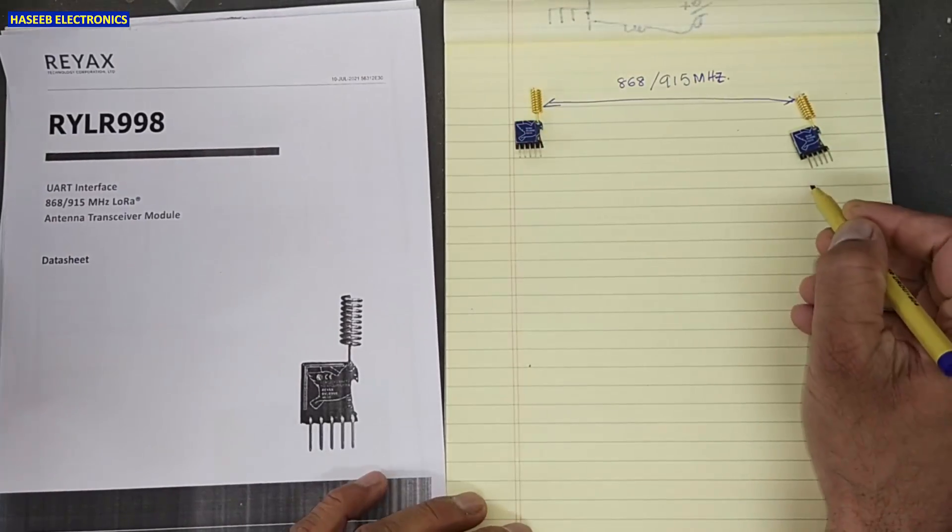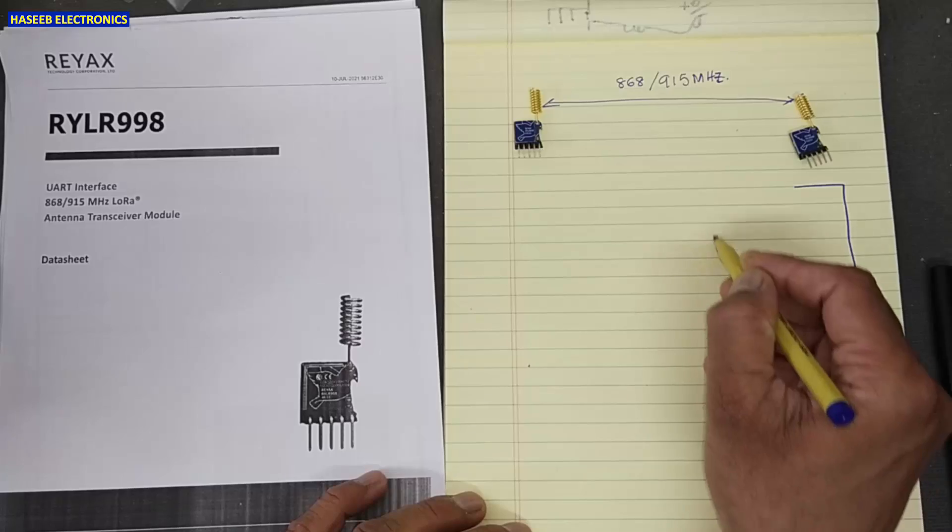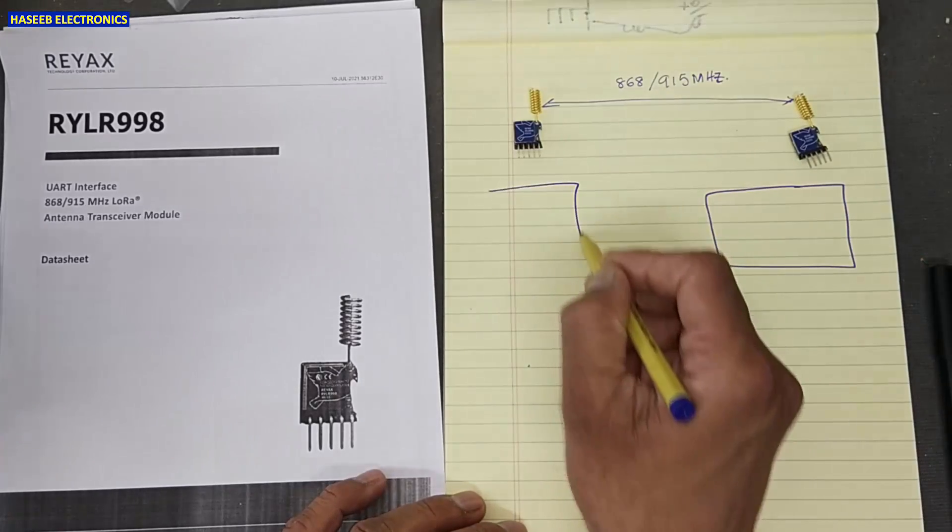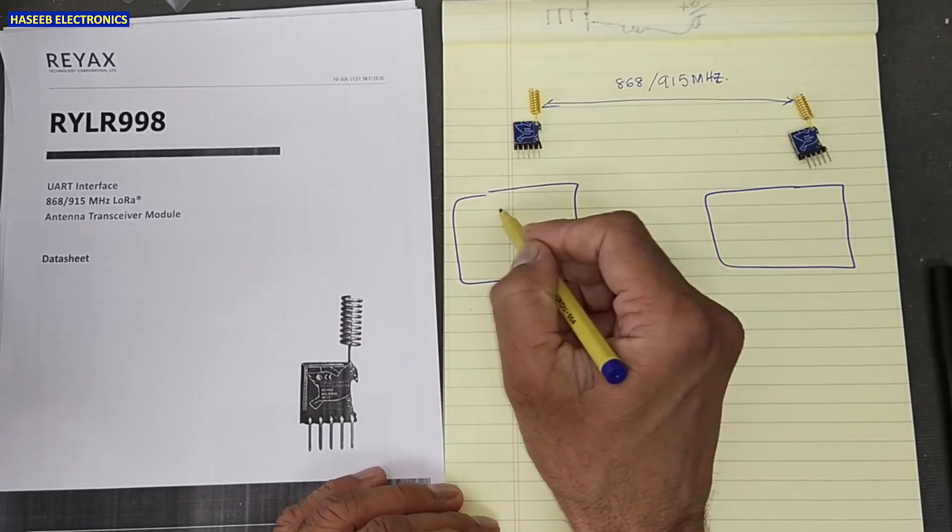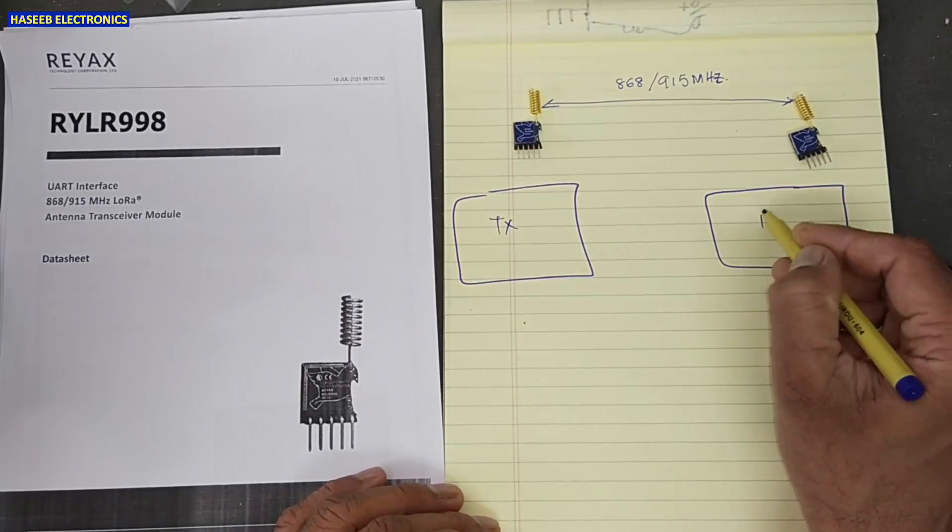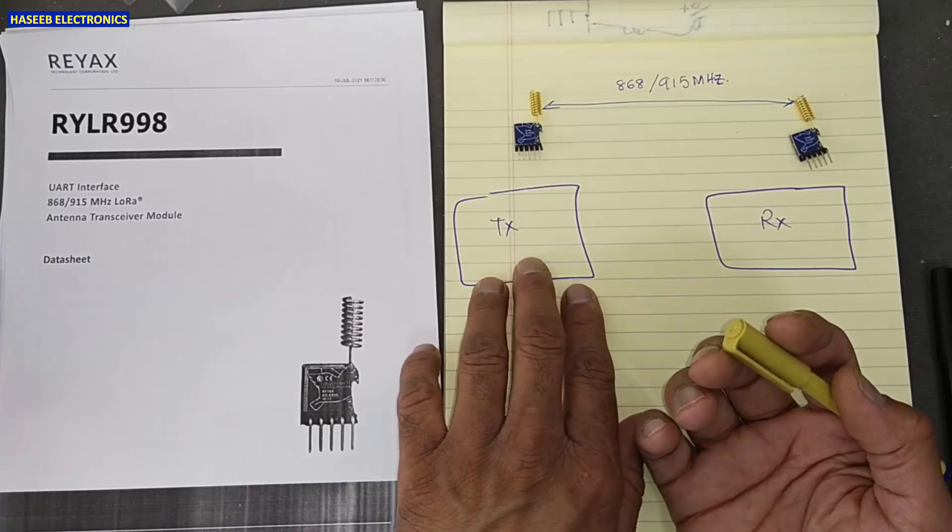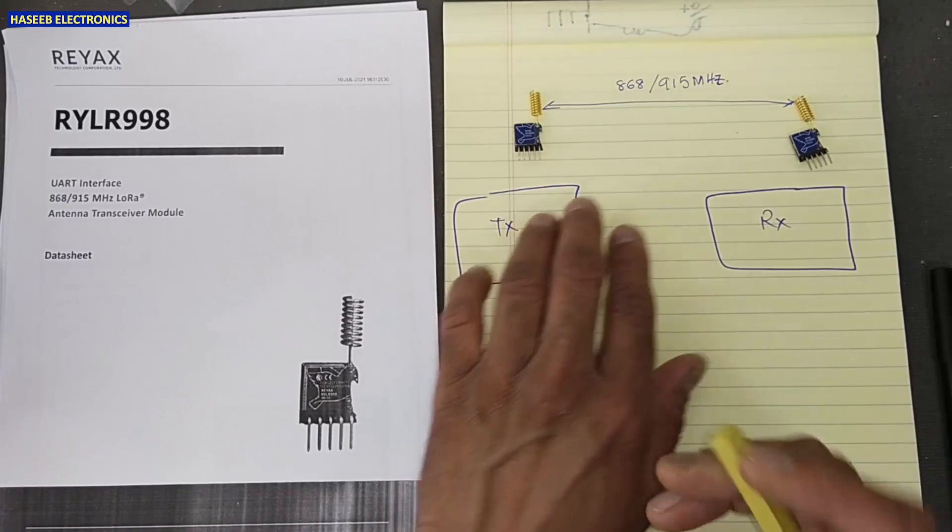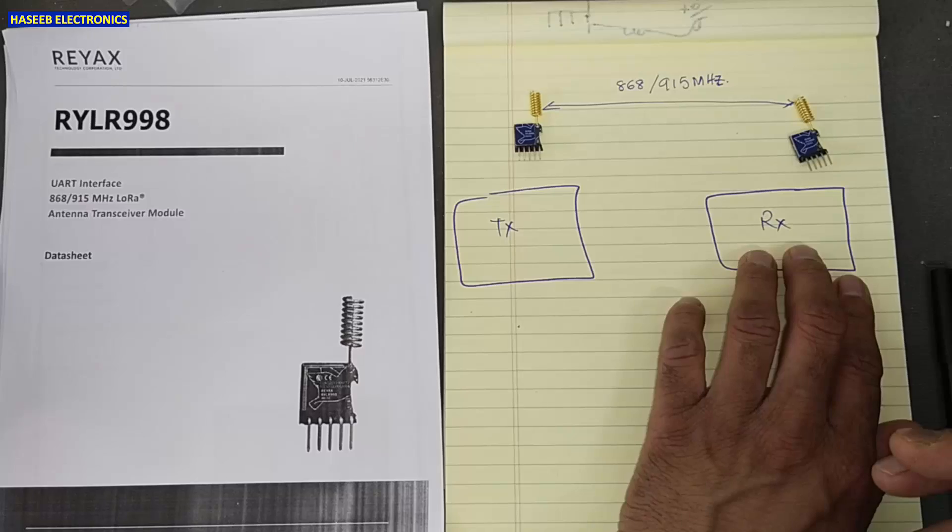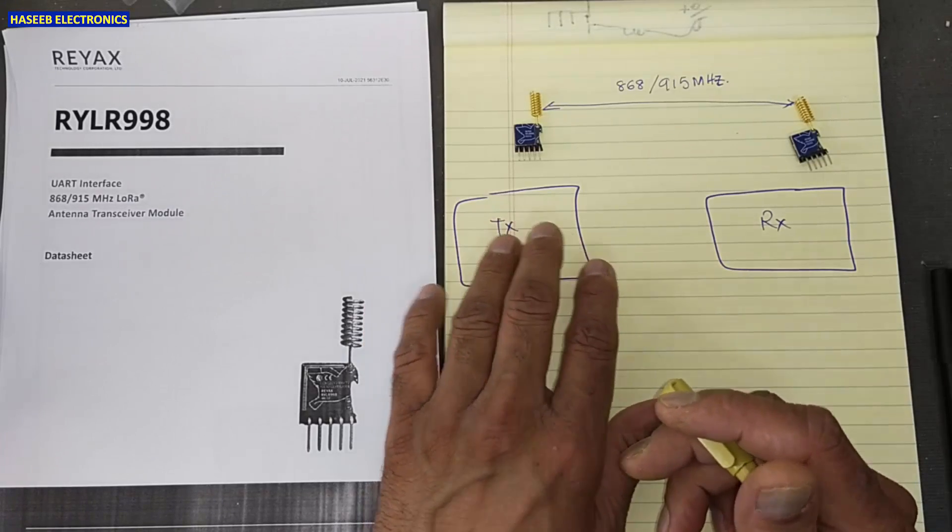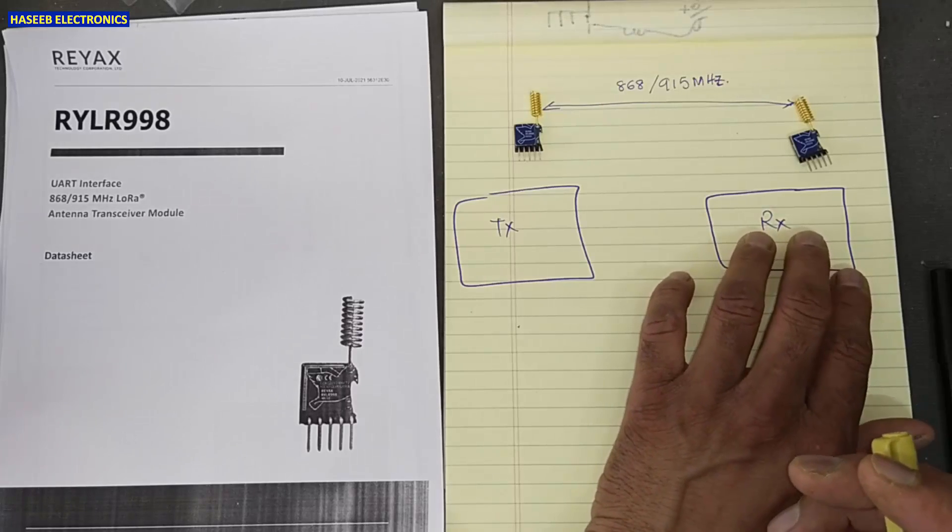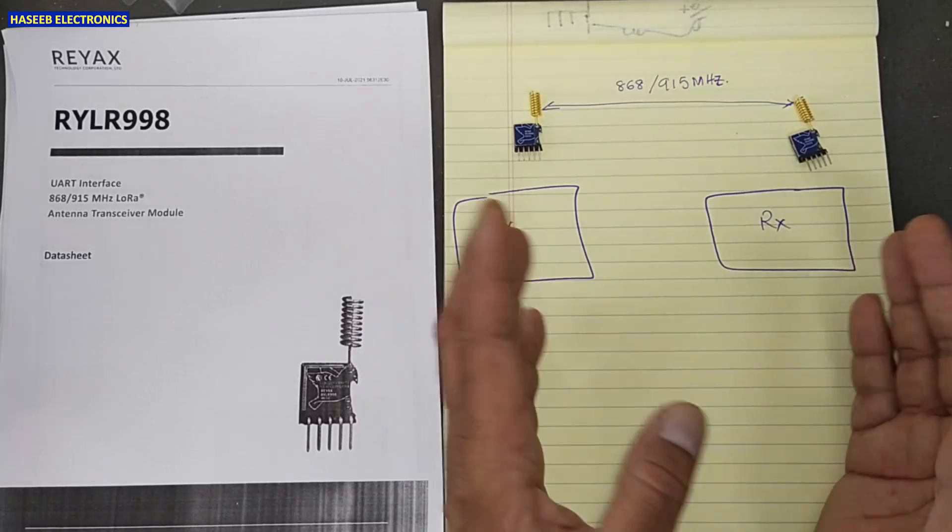We will provide any signal here. If we are transmitting from here TX, so it is receiver. We can transmit from any mobile device and we can receive on any mobile device. We can use any microcontroller, Arduino, and here we can use from any processor, anything UART.